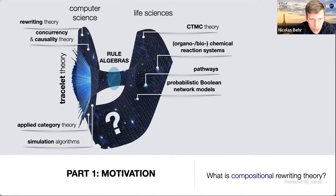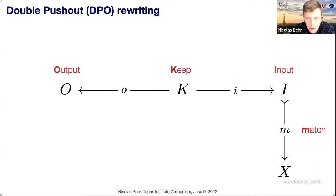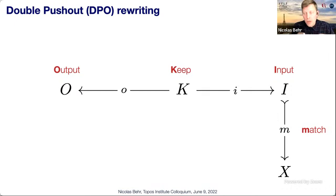If the theory is compositional it gives rise to what I call rule algebras, and also to so-called bracelets. With these two ingredients you can fully formalize many concepts from the life sciences. As a quick intro to rewriting: a rule in DPO semantics is a span — an input pattern, an output pattern, and something you keep. You apply such a rule to an object X by exhibiting a match, typically a monomorphism.